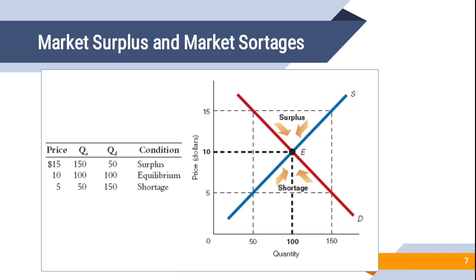Above the equilibrium we have surplus. At price 15, the price is so high that more people want to sell — 150 products are available for sale due to the positive relationship between price and supply. But demand decreases from 100 to 50. So 150 items are available but only 50 people want to buy — a difference of 100. Suppliers see their products unsold and will decrease the price back to 10, the market clearance price.